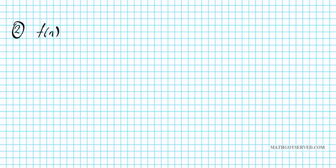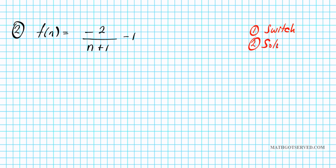Let's take a look at problem number two. What if we have the function f of n equals negative two over n plus one minus one? In this case we have a rational function. The two steps we're going to use are: switch, and then solve for the inverse, which is f to the negative one of n.